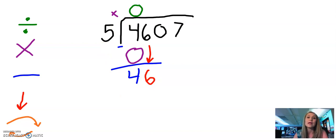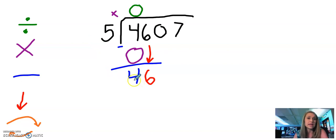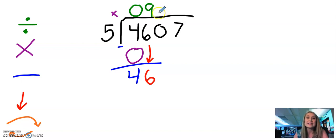And then we bring it on back and start the process all over, this time looking at the 46 and the five. Asking ourselves, how many times can five go into 46? Or five times what gets me close to 46? Using my facts, I know that five times nine is 45. So I'm going to put the nine up here and then move on to the next step, which is multiplying.